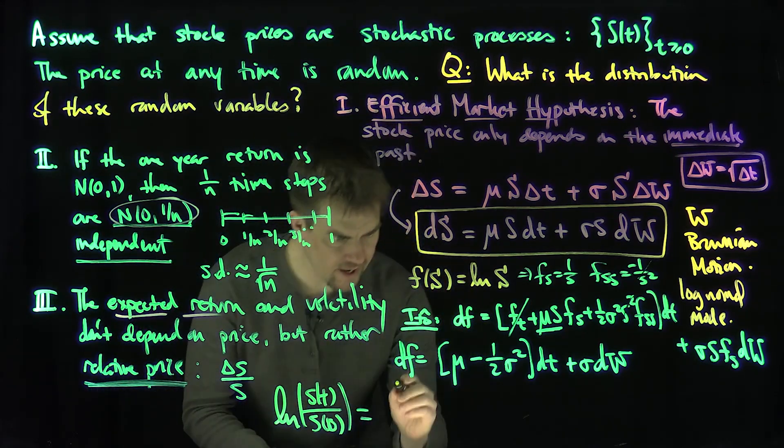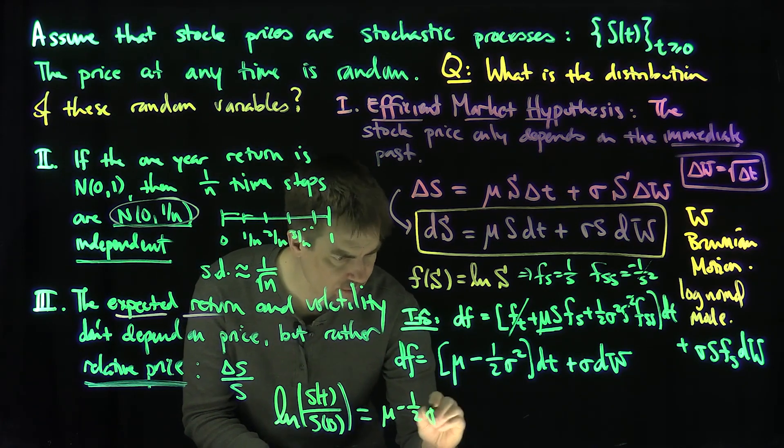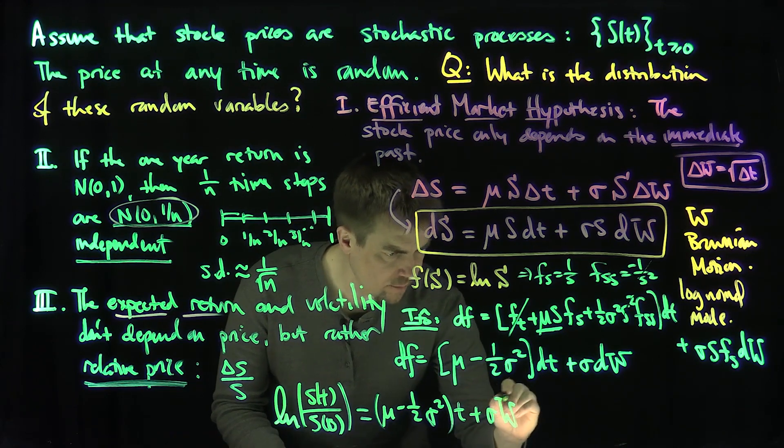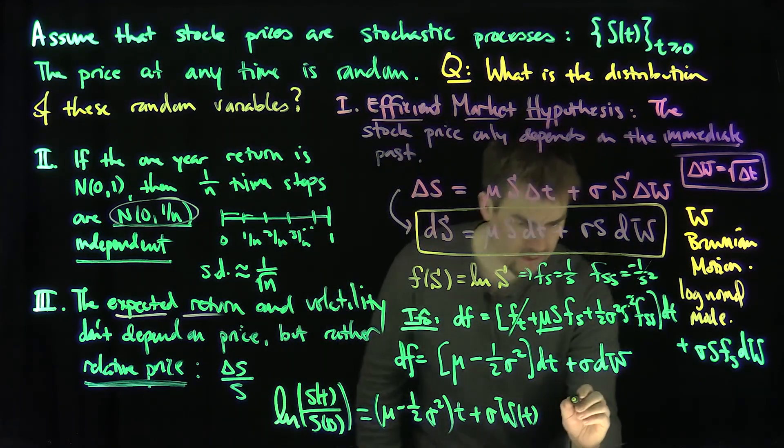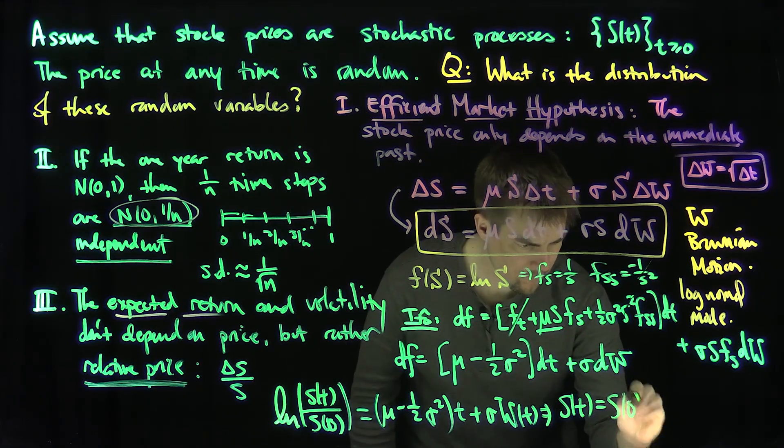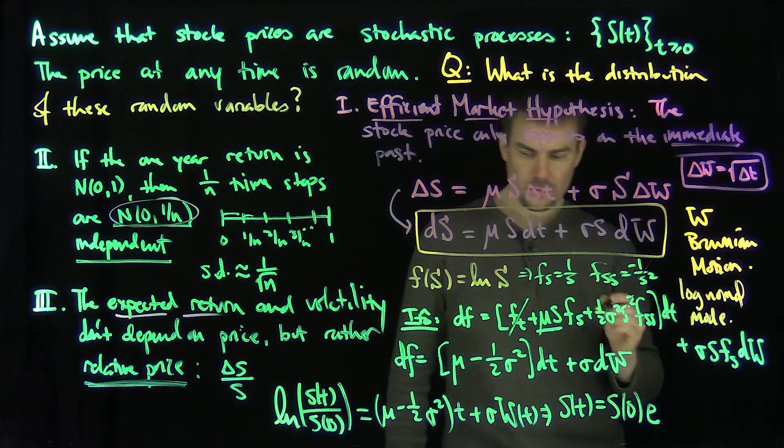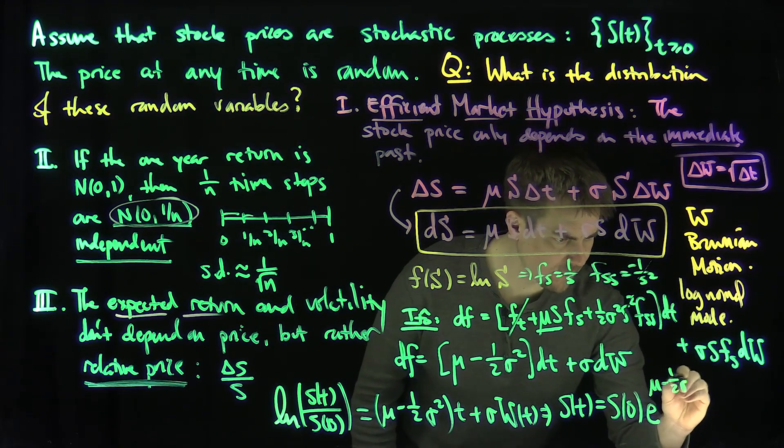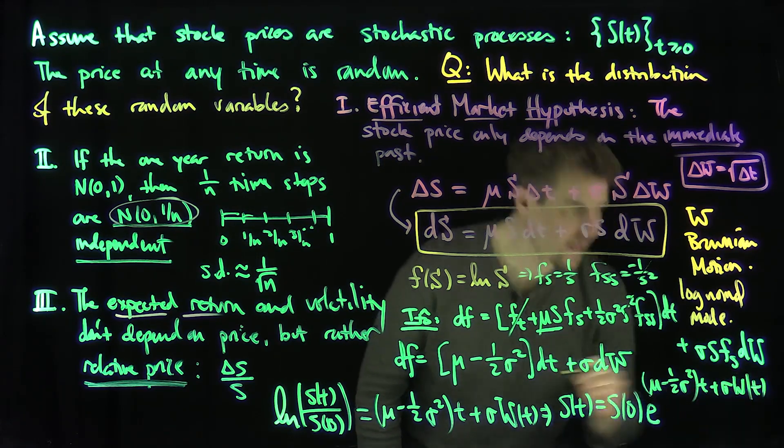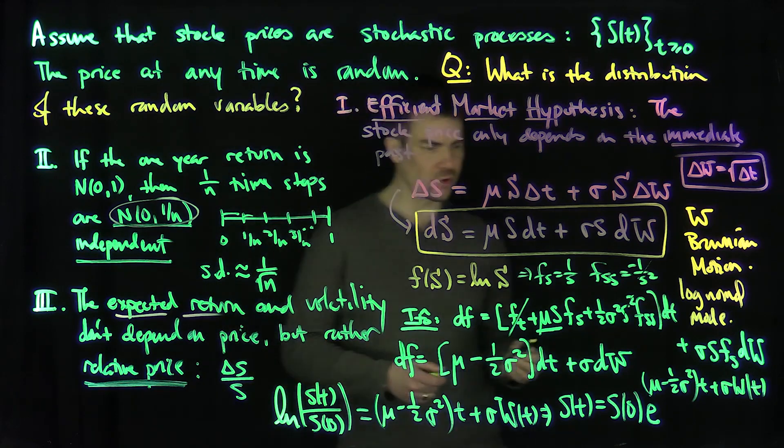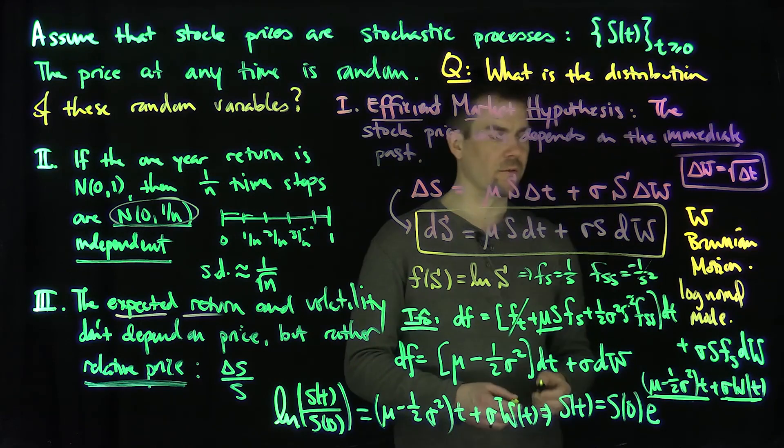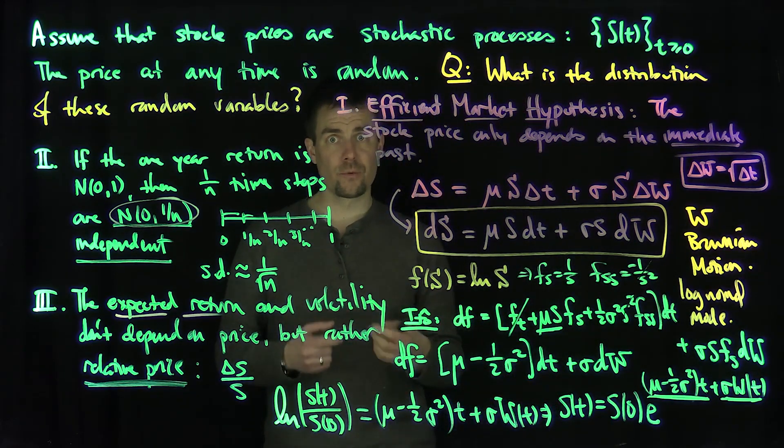Therefore, S(T) is going to be S(0) e to the mu minus one-half sigma squared T plus sigma W(T). And that's Brownian motion. Of course, we know that Brownian motion is normally distributed. This is deterministic and this is normally distributed. Whenever I have an exponential of a normally distributed random variable, we call that a log-normal distribution.